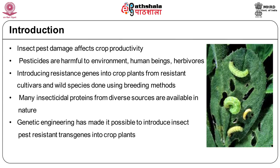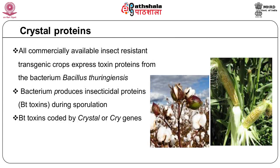The effort of plant breeders to introduce resistance genes into crop plants from other resistant cultivars and related wild species is a time-consuming and difficult task. However, the technology of genetic engineering has made possible the cloning and introduction of insect pest resistant transgenes into crop plants. Many insecticidal proteins from diverse sources are effective against agriculturally important pests without causing problems to mammals, animals, beneficial insects, and other organisms. All commercially available insect resistant transgenic crops express toxin proteins from the bacterium Bacillus thuringiensis.